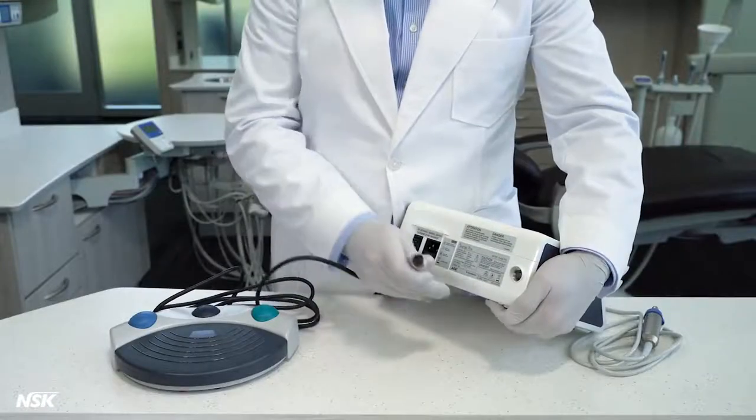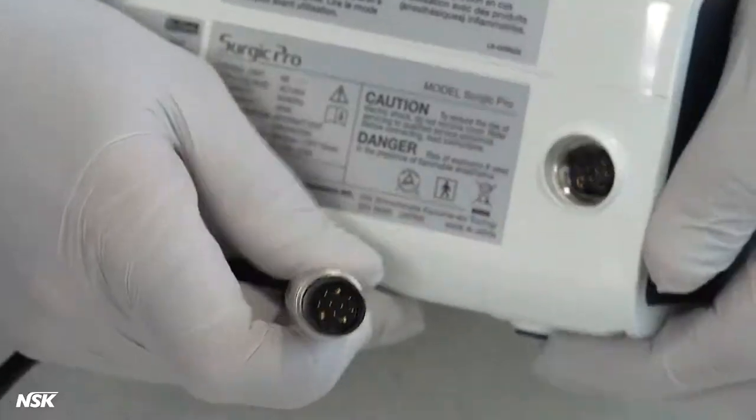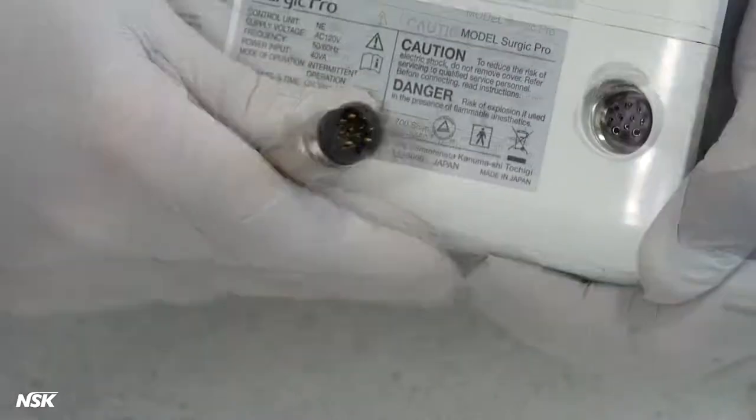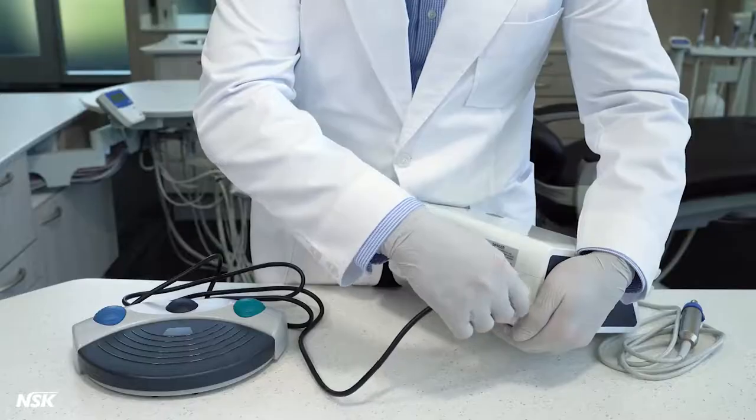Next, connect the foot control cord using the guide pin located at the bottom of the connector, which is at the back of the unit. Tighten the lock nut to screw and secure the connection.